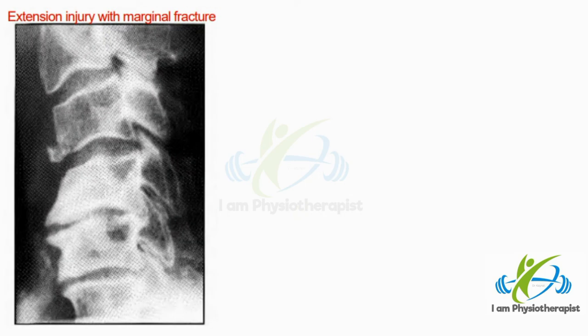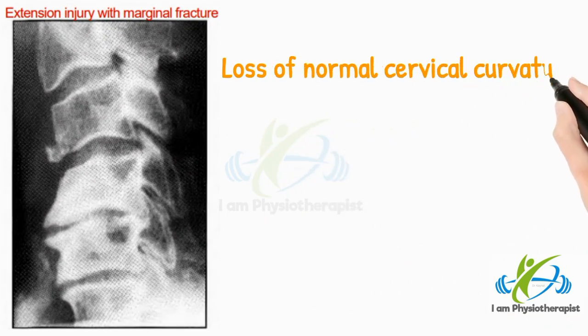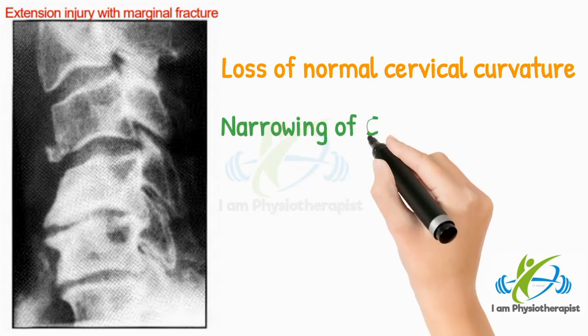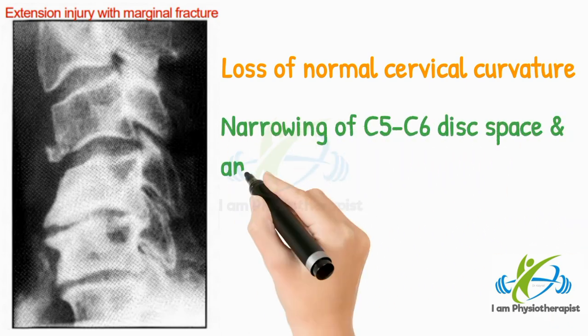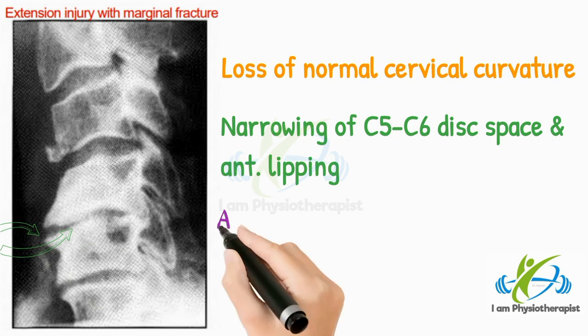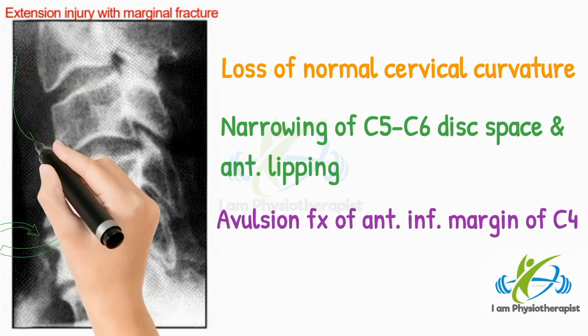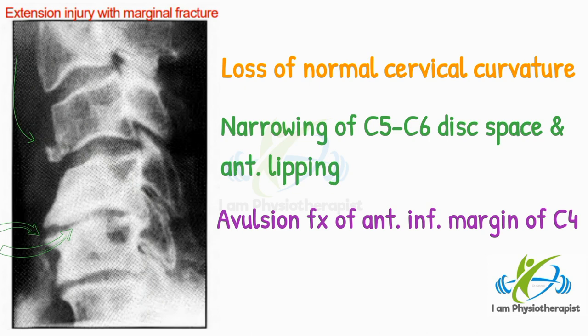In this X-ray, there is loss of normal cervical curvature, narrowing of the C5–C6 disc space, and anterior lipping. There is an avulsion fracture of the anterior inferior margin of C4. Diagnosis is extension injury with marginal fracture.